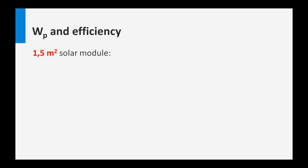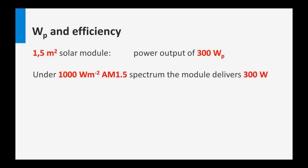There were also some discussions and questions about the difference between watt peak and efficiency. I would like to explain this by taking as an example a solar module with an area of 1.5 square meters. Such a module can have a power output of, for instance, 300 watt peaks. This means that if we put this solar module under standard test conditions — which are 1000 watts per square meter at AM 1.5 — the module would deliver 300 watts. So watt peak means the amount of power generated by a module or device under standard test conditions.